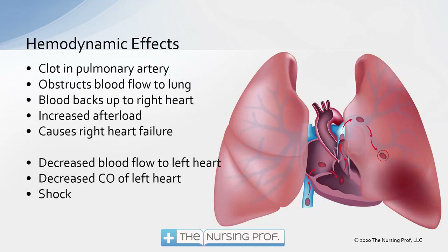Looking at the hemodynamic effects: the clot travels up through the venous circulation and the inferior vena cava into the right atrium, down into the right ventricle, and gets pumped out into the pulmonary artery and into the lungs. The clot stops and gets clogged in one of those vessels in the lung — the first place where the vasculature starts to narrow. The clot travels through progressively bigger vessels all the way to the heart, and then when it enters the pulmonary artery and vessels narrow, that's where it gets stuck.